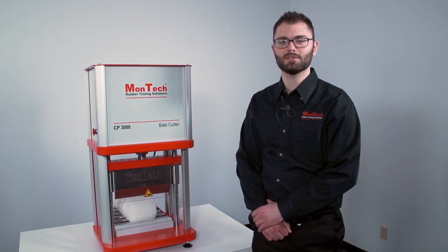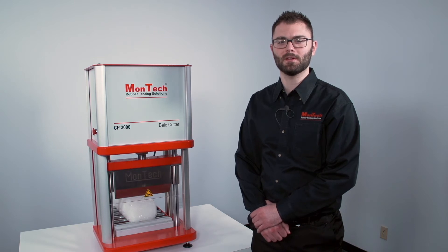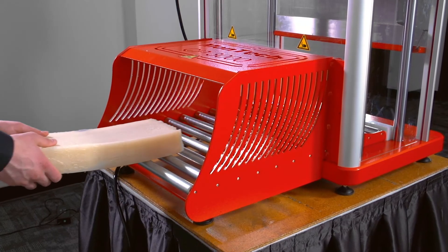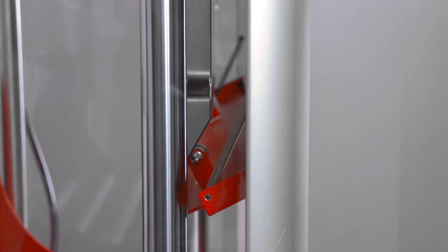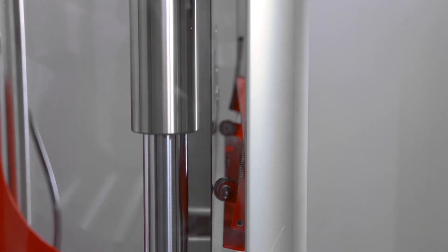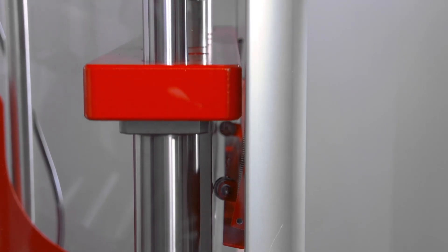Additional safety features are available for the CP3000 Compact as well. Conveyor tunnels can be attached to prevent operators from accidentally reaching into the cutting area while loading material. Additionally, a mechanical blade cover can be installed to conceal the blade edge when the instrument is not in use.